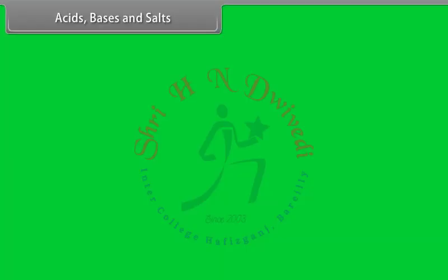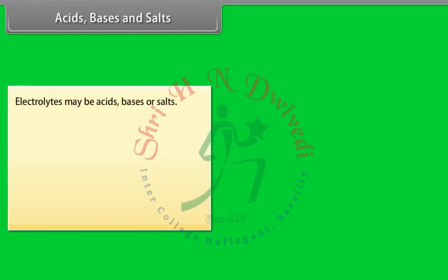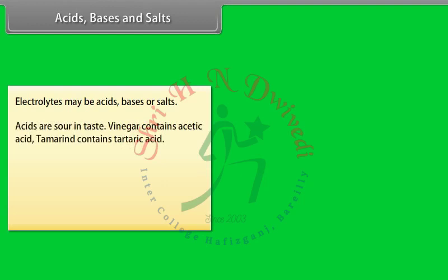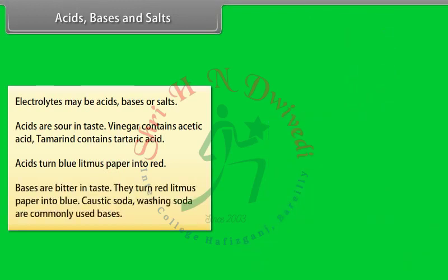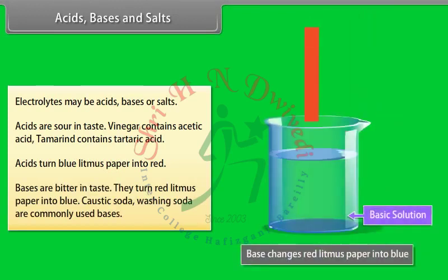Electrolytes may be acids, bases, or salts. Acids are sour in taste — vinegar contains acetic acid and tamarind contains tartaric acid. Acids turn blue litmus paper red. Bases are bitter in taste and turn red litmus paper blue. Caustic soda and washing soda are commonly used bases.